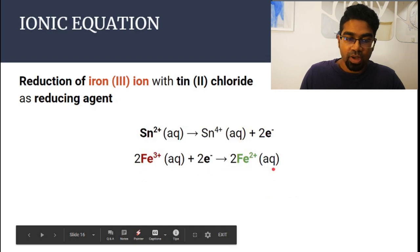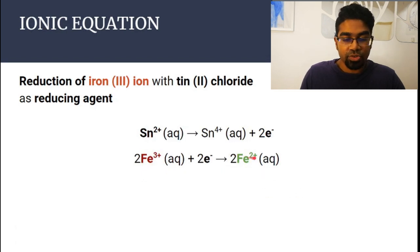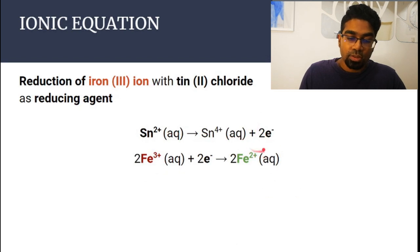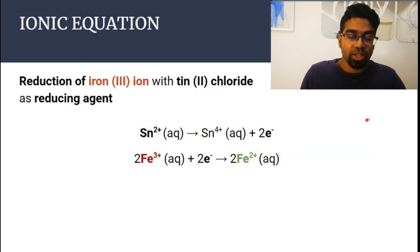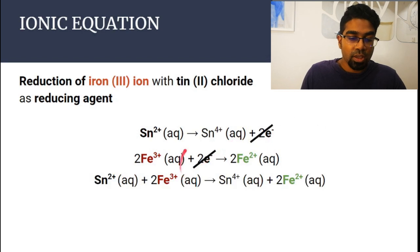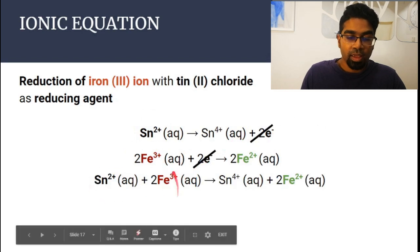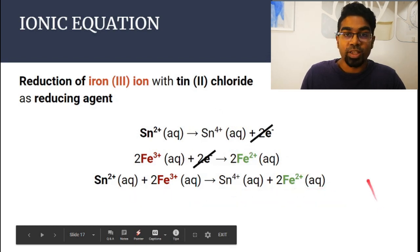The half equation for iron again is the same — iron-3 reduced to iron-2. Since two electrons are lost, two electrons have to be gained, so we add two in front of the iron half equation as well. In order to obtain our full ionic equation, we cancel the electrons. On the left we have Sn²⁺ and Fe³⁺. On the right we have Sn⁴⁺ and Fe²⁺. This is our full ionic equation.